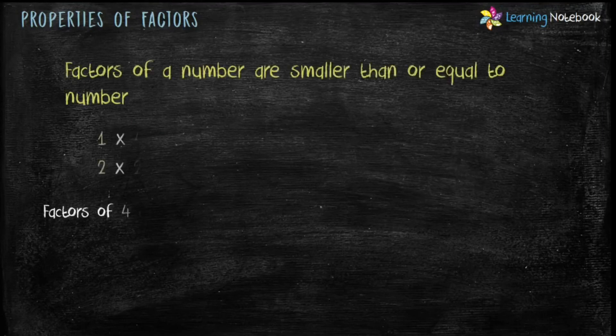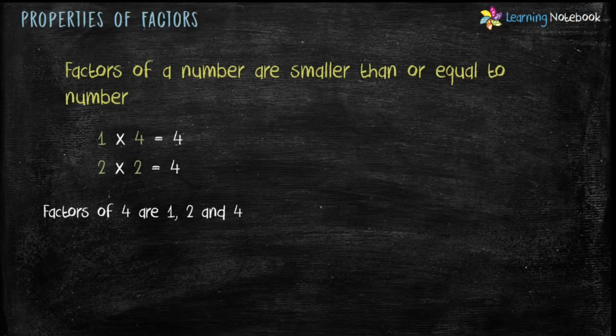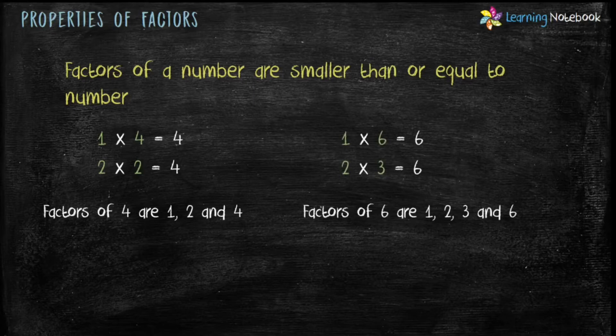The next property is: factors of a number are smaller than or equal to the number. Since the greatest factor is the number itself, all other factors would be smaller than the number. For example, in case of factors of 4, factors 1, 2, and 4 are smaller than or equal to 4. Similarly, in case of factors of 6, factors 1, 2, 3, and 6 are smaller than or equal to 6.